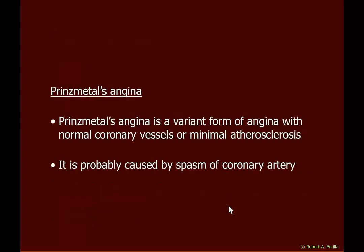Prinzmetal's angina is another variant in which the coronary vessels show no sclerotic tissue — an angiogram will find nothing. This is thought to be caused by coronary artery spasms where the smooth muscles suddenly contract for unknown reasons. That sudden contraction leads to a reduction in supply; with demand remaining high and supply suddenly dropping, the patient feels chest pain.